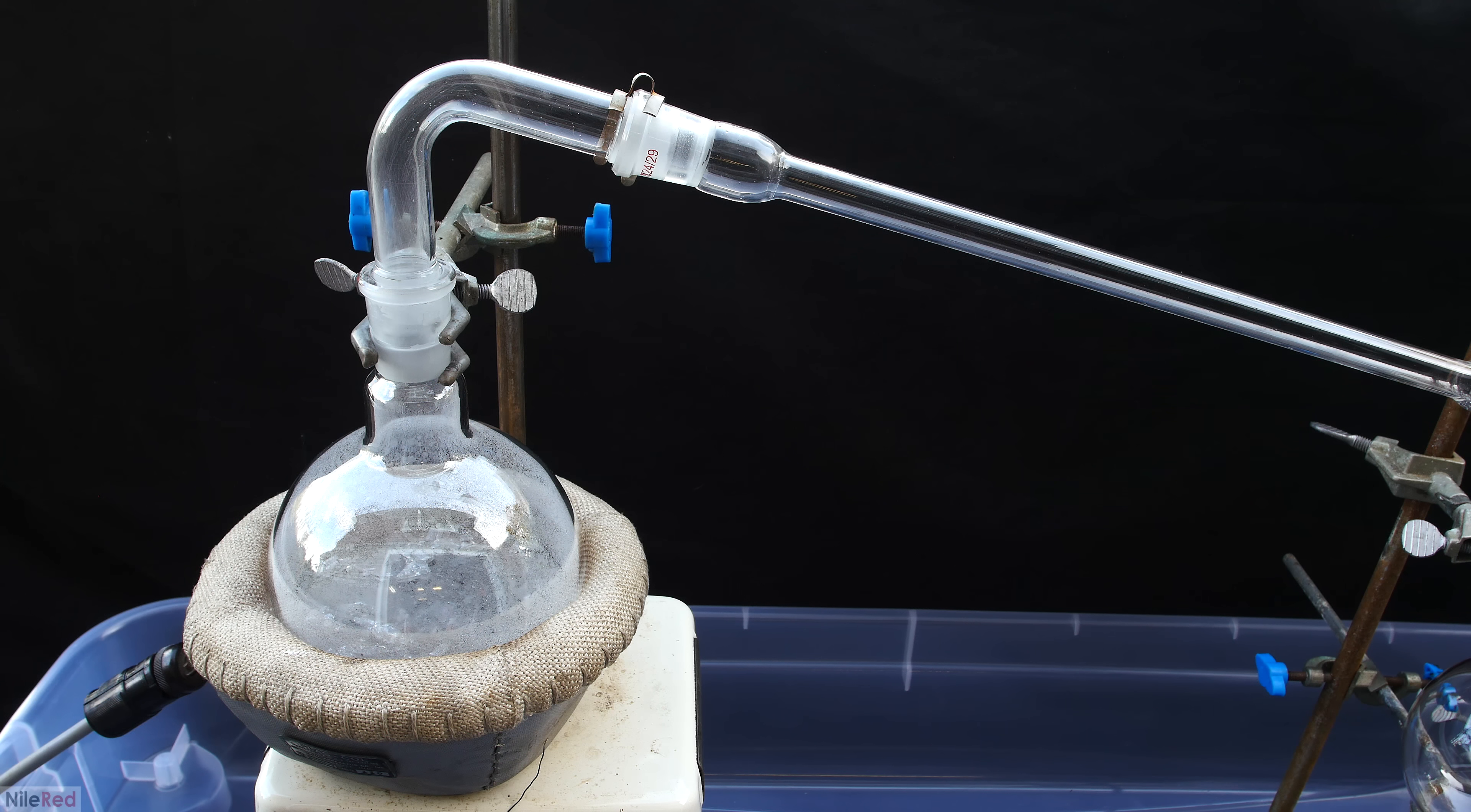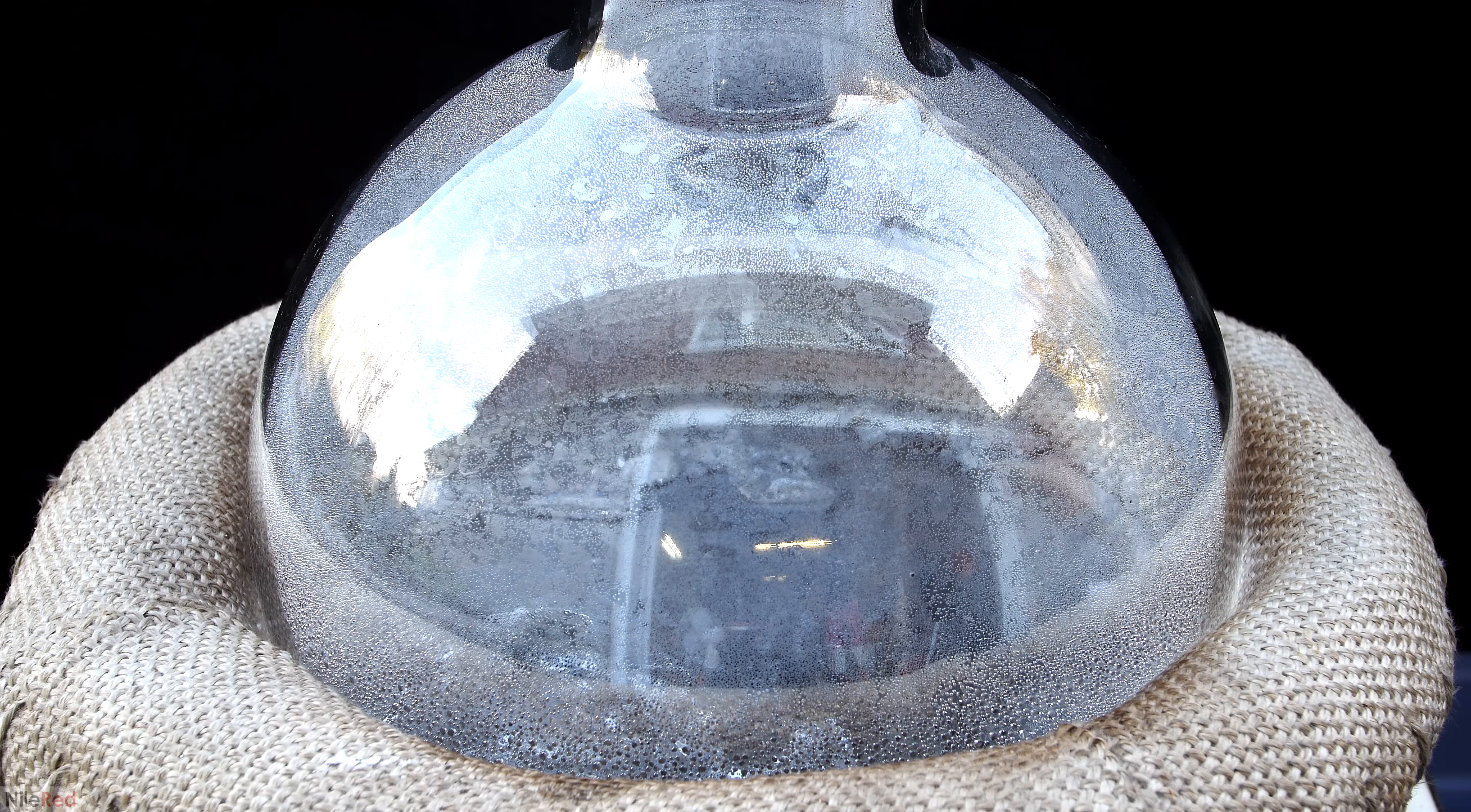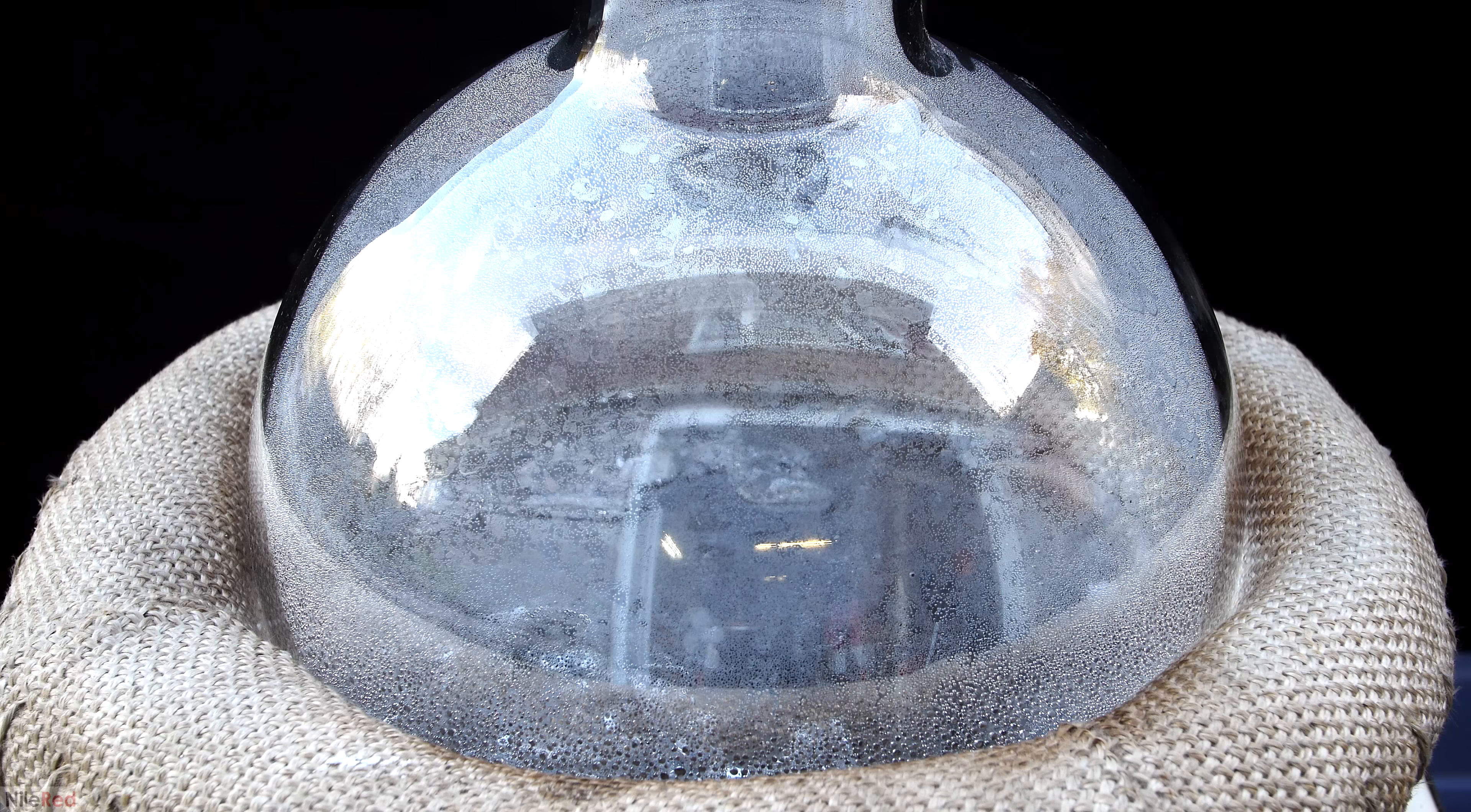Not long after I started heating things, mercury started to collect on the sides of the flask. This made for a very nice and reflective surface, so you can actually see my house and maybe even the camera. This doesn't last for too long though, and once the mercury starts to boil, the flask should clear up a lot.